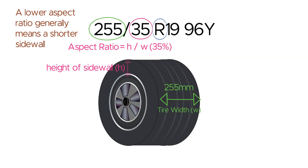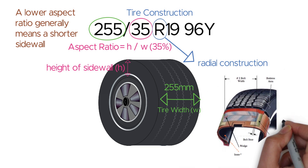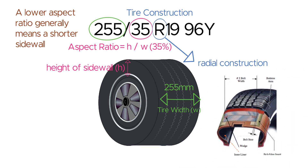The letter R signifies the construction type of the tire. R stands for radial construction, which is the most common type of tire construction used today. Radial tires have ply cords that run radially across the tire from bead to bead, providing flexibility and a smoother ride compared to bias ply tires.